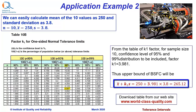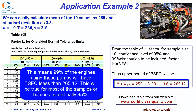The meaning of this result is that most of our engines — that is, 99% of our engines using these fuel pumps — will have fuel consumption less than 265.12. And this will be true for most of our samples, that is, 95% of our samples.